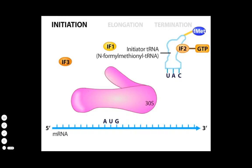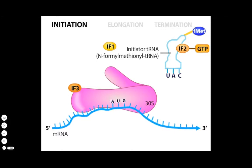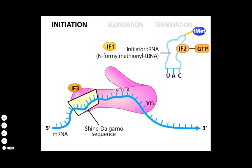IF3 readily binds to the small ribosomal subunit, and its presence blocks the large and small subunits from prematurely associating. IF3 facilitates the binding of the mRNA to the small subunit. The binding occurs just four to eight bases upstream of the AUG start, where a consensus sequence called the Shine-Dalgarno sequence in the mRNA anneals near the end of the 16S ribosomal RNA in the small ribosomal subunit.